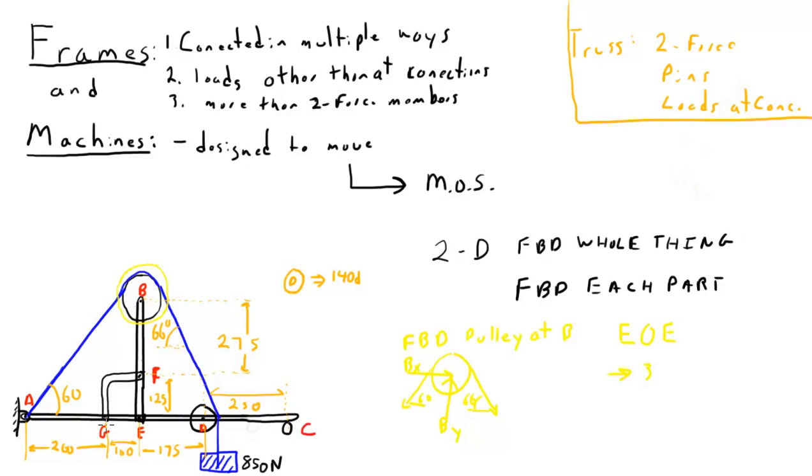And then this member that goes from G over here to F is also a two-dimensional structure. I can actually write three equations for it, but we'll recognize right out front that what the moment equation tells us is that that line of action needs to look just like this. It needs to run right through those two points. So nonetheless, I have one, two, three, four, five. I can write three equations for each of them, plus three equations for the free-body diagram of the whole thing. So that's six free-body diagrams times three. That's 18 different equations that I can write.